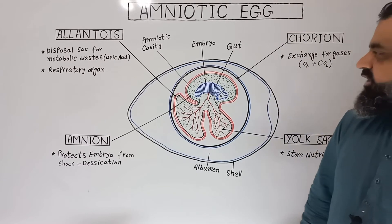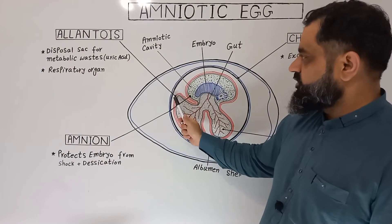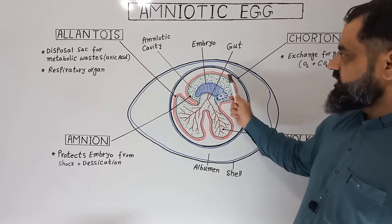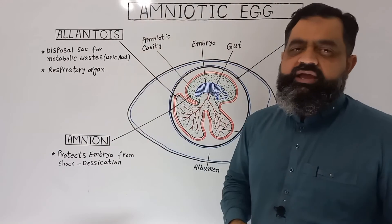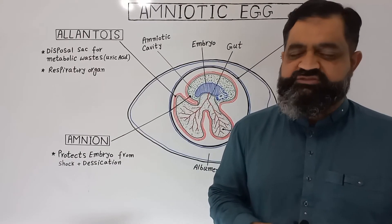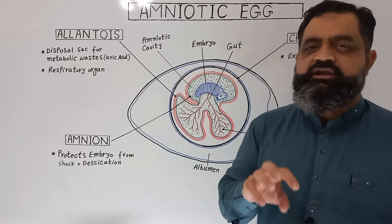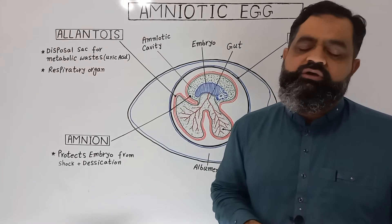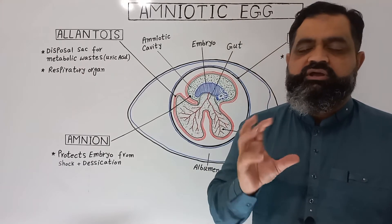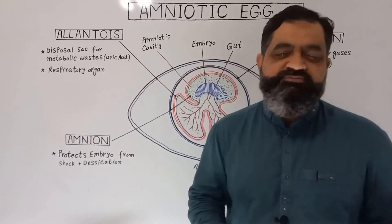The second layer, shown in red next to the Chorion, is known as the Allantois. The Allantois has two functions: first, it disposes of metabolic waste produced by the developing embryo, especially uric acid; and second, it works in conjunction with the Chorion for the exchange of gases between the external environment and the embryo, also acting as a respiratory organ for the developing embryo.